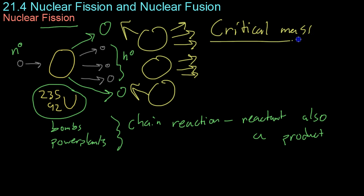which is the minimum mass to sustain a chain reaction. So the critical mass is the amount of fissile material you need to maintain your power plant or your bomb and keep the reaction going until it's reached completion.